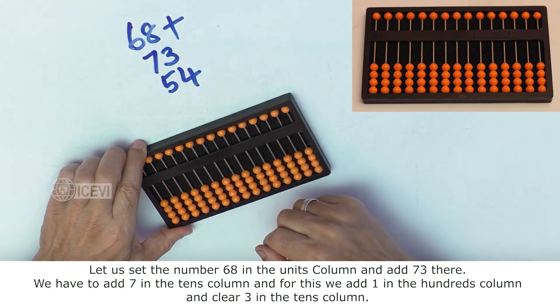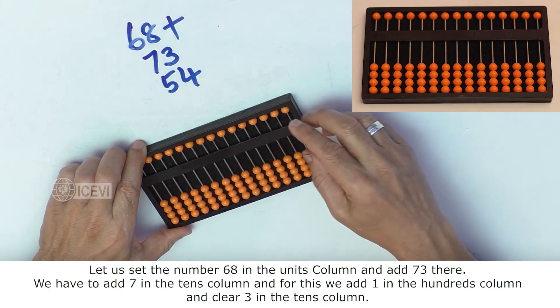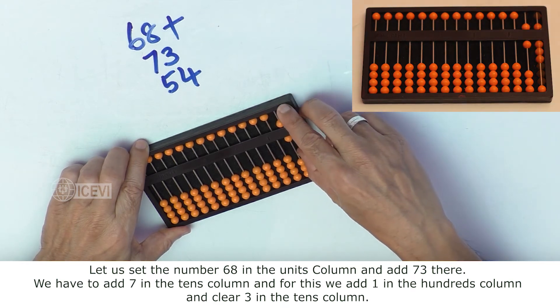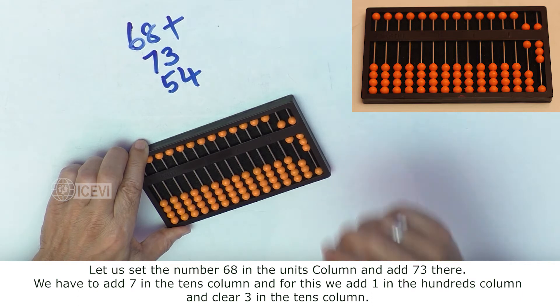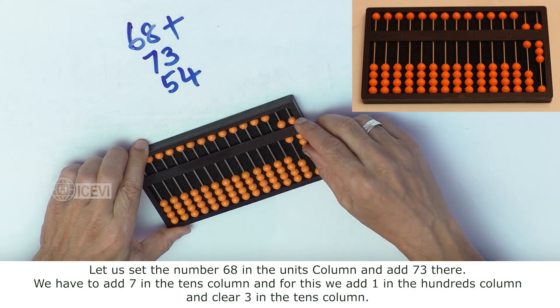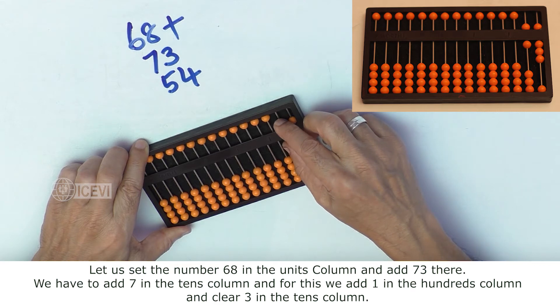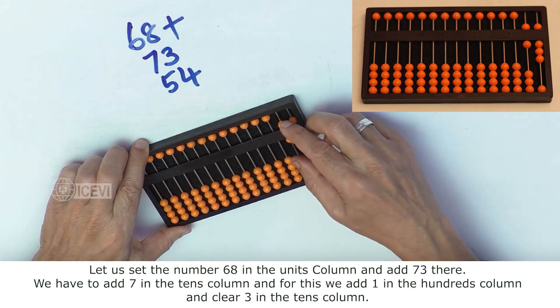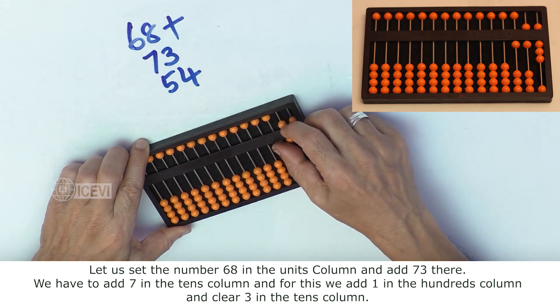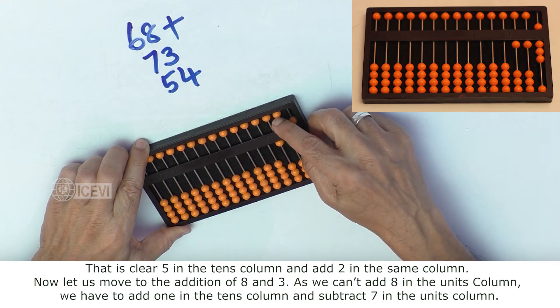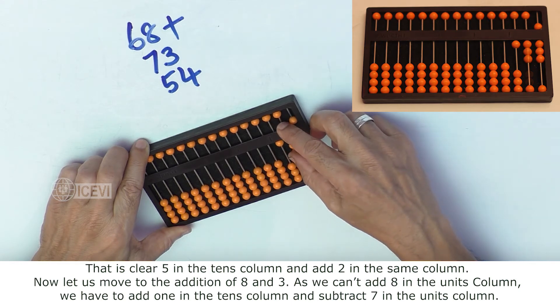Let us set the number 68 in the Abacus and then add 73 with this. We have to add 7 in the tens column, and for this we add 1 in the hundreds column and clear 3 in the tens column. That is, clear 5 in the tens column and add 2 there.